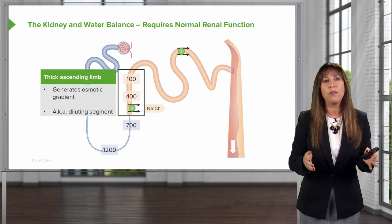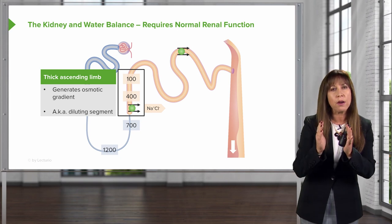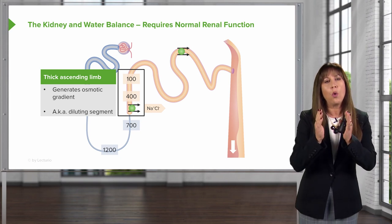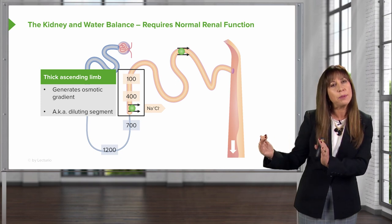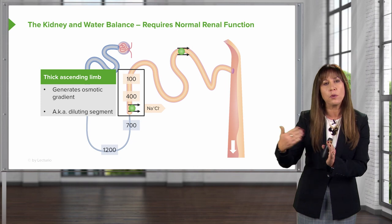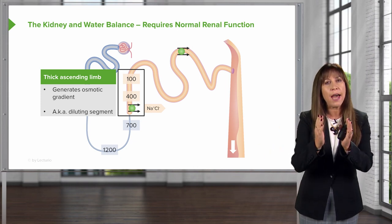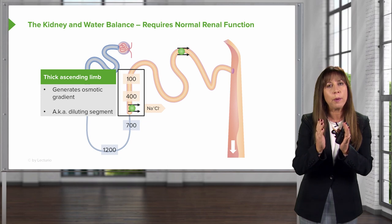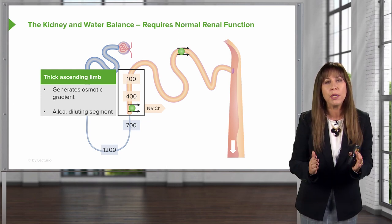Once we get to the thick ascending limb of the loop of Henle, remember what's there — that's the NKCC2. We are going to reabsorb sodium, potassium, and chloride. That helps to generate our osmotic gradient in the medulla associated with the vasa recta. But that segment is also impermeable to water, so it's what we refer to as our diluting segment.